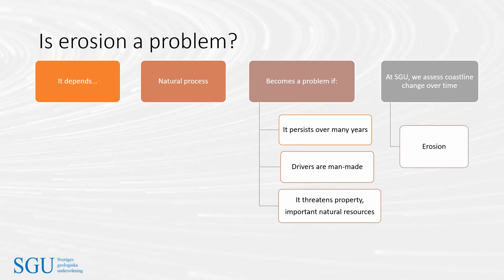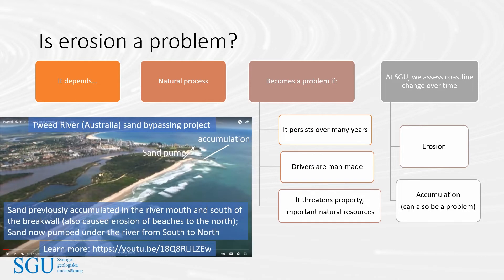At SGU, assessing erosion has been part of a general assessment of coastal change over time, which also includes accumulation. Accumulation can also be a problem, for example by infilling of river mouths which can restrict or pose a hazard to boating. A great example is the Tweed River in eastern Australia, where the river mouth was regularly infilled by sand. Sea walls built at the river mouth blocked northwards sand transport, leading to accumulation to the south and erosion of beaches to the north. This problem has now been solved by a sand pump which transports sand through pipes under the river and deposits it on beaches to the north.